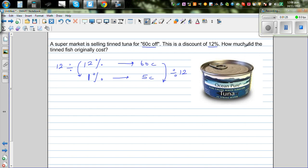Now the question is how much did the tinned fish originally cost? So they're asking you to find the hundred percent. So basically what you do is if you know 1%, you can find 100%. So this is proportional thinking. From 1%, 1 times what gives you 100? Well 1 times 100 gives you 100. So 5 cents times 100 is 500 cents. That means the original cost of the tinned fish was $5.